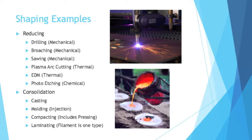Then there is compacting, and one type most people are familiar with is pressing — a large press slamming down on something. There are also a bunch of types of laminating. Filament laminating is one I'm most familiar with: I worked at a place that made motors by hand, which involved winding copper wires around a spool — that would be filament laminating.